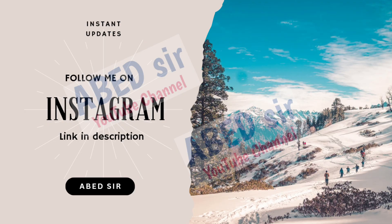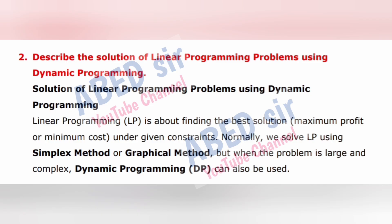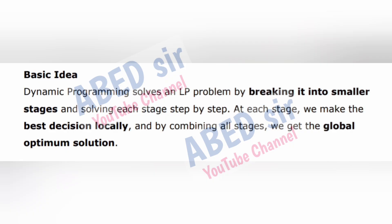Next important long question: Describe the solution of linear programming problems using dynamic programming. Linear programming (LP) is about finding the best solution — maximum profit or minimum cost — under given constraints. Normally we solve LP using the simplex method or graphical method, but when the problem is large and complex, dynamic programming can also be used. Basic idea: Dynamic programming solves an LP problem by breaking it into smaller stages and solving each stage step by step. At each stage, we make the best decision locally and by combining all stages, we get the global optimum solution.